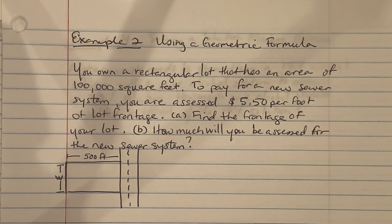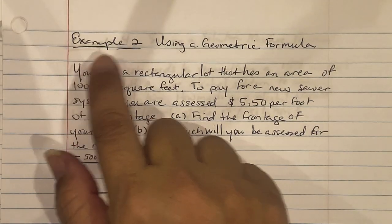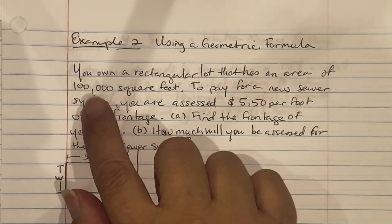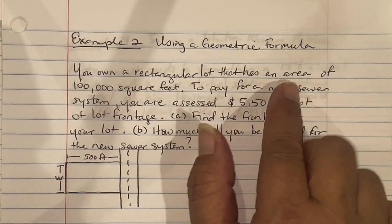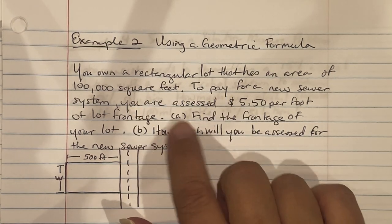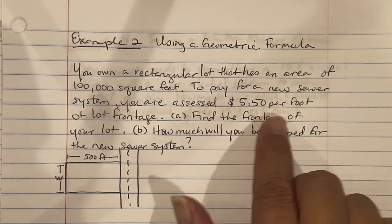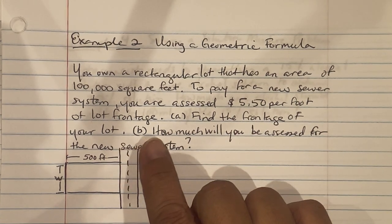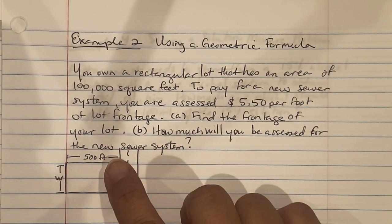Example 2, using a geometric formula, says you own a rectangular lot that has an area of 100,000 square feet. To pay for a new sewer system, you were assessed $5.50 per foot of lot frontage. Find the frontage of your lot and then find out how much will you be assessed for your new sewer system.